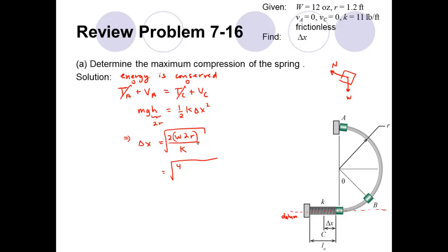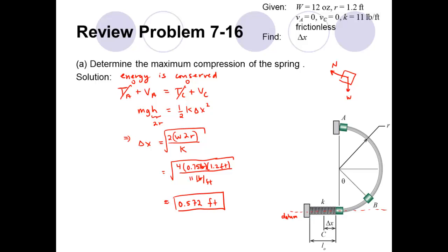We can solve for the compression. The height is 2R since it's a perfect semicircle — point A is directly above the lower point, so the diameter is the initial height. Setting mg times 2R equal to one-half k delta x squared, I multiply through by 2, divide by k, and take the square root. Plugging in numbers: 4 times 0.75 pounds times 1.2 feet divided by 11 pounds per foot, then taking the square root, gives a spring compression of approximately 0.572 feet. That completes the first part.